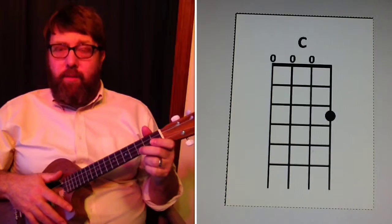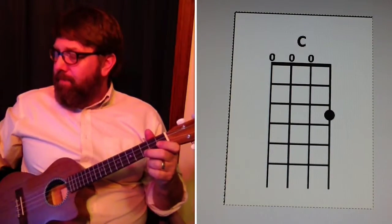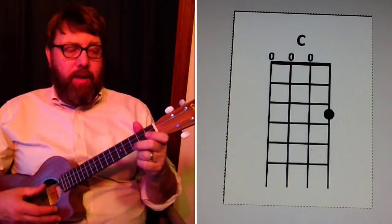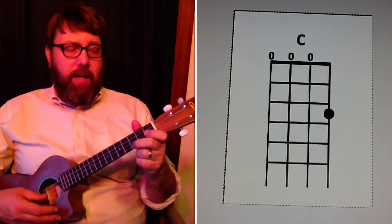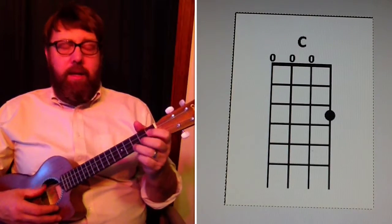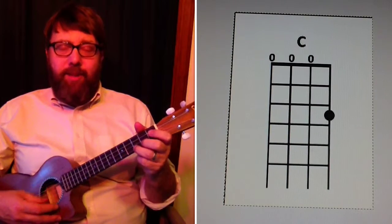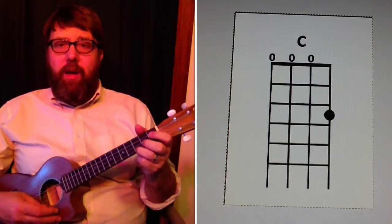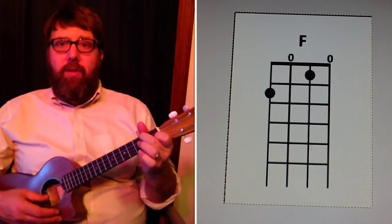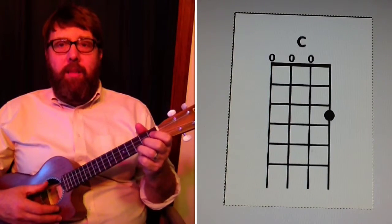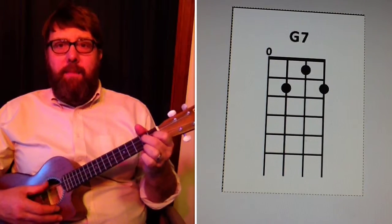Now I'm going to start the metronome and we're going to count four in, then we are going to play four in C and then we'll start singing the song together. One, two and three and four and — Oh, the camp town ladies sing this song, doo-dah, doo-dah, camp town racetrack five miles long, oh, the doo-dah day. Gonna run all night, gonna run all day. Bet my money on a bobtail nag, somebody bet on the pay.